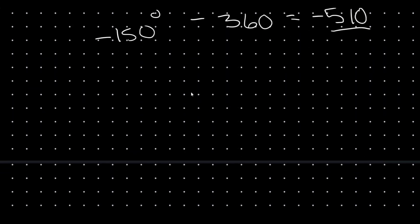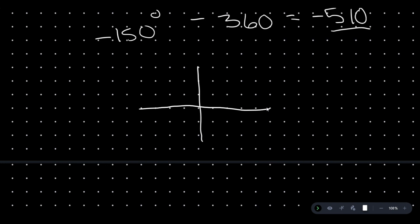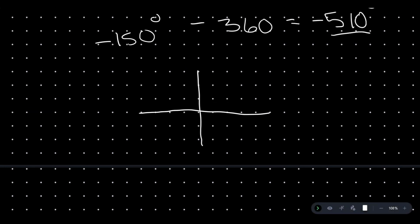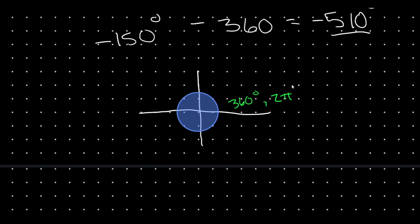Now, this phenomenon isn't just with degrees — it's also with radians. Remember that we can measure our unit circle in radians or degrees. One full revolution is 360 degrees or 2π radians. Therefore, if we are in radians, we can add or subtract 2π in order to find a coterminal value.